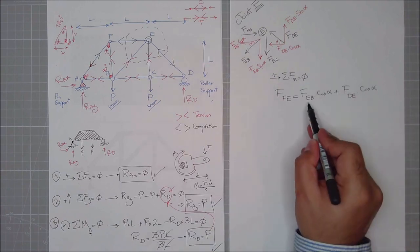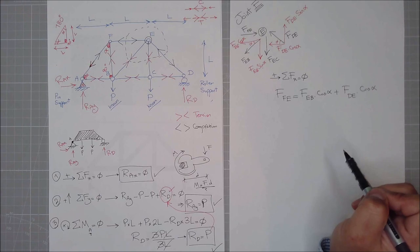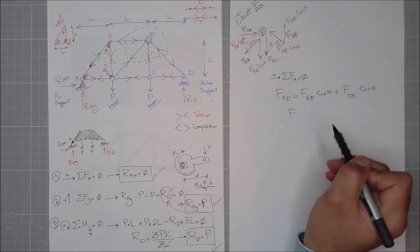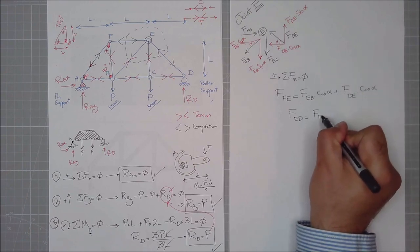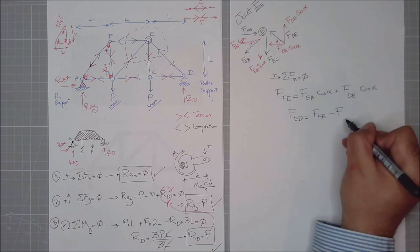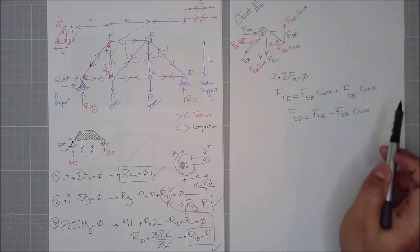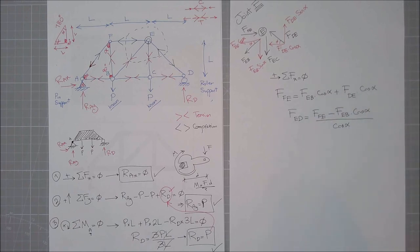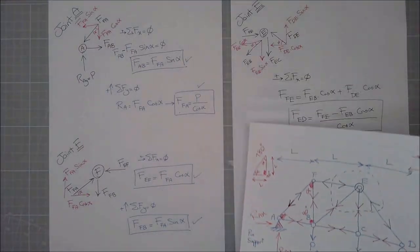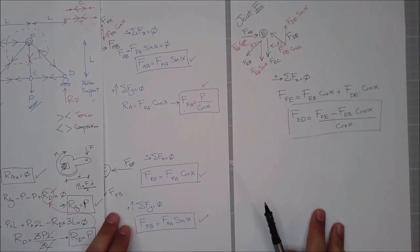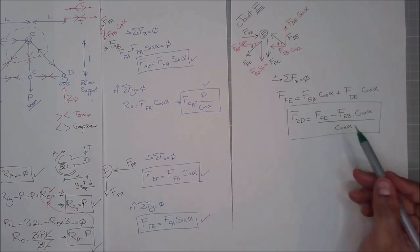From this, if I simplify it, I have two cosines of alpha. So I can simplify it such that FED is equal to FFE minus FEB times cosine of alpha, divided by cosine of alpha. Why did I do that? Because before, I have figured out what is FEF. FEF and FFE are the same, so I already know this.